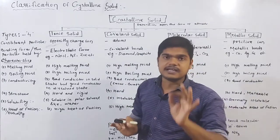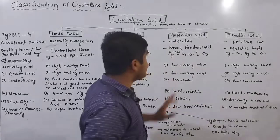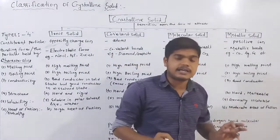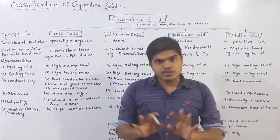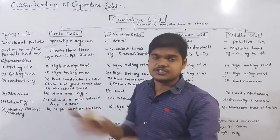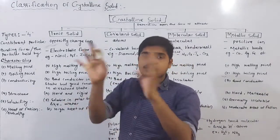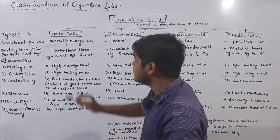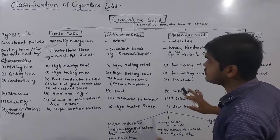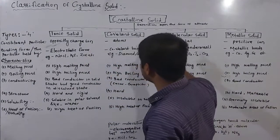The ionic solid constituent particle is called the ion, the covalent solid constituent particle is called the atom, the molecular solid constituent particle is called the molecule, and the metallic solid constituent particle is called the positively charged ion. These are the different types of constituent particles.